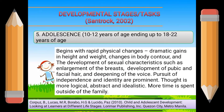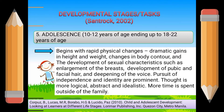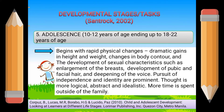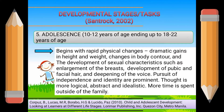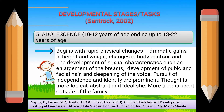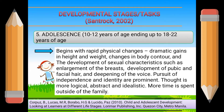Next is the adolescence stage, from 10 to 12 years of age ending up to 18 to 22 years of age. It begins with rapid physical changes: dramatic gains in height and weight, changes in body contour, and the development of sexual characteristics such as enlargement of the breasts, development of pubic and facial hair, and deepening of the voice. Pursuit of independence and identity are prominent. Thought is more logical, abstract, and idealistic. More time is spent outside of the family.